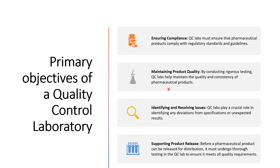QC labs help maintain the quality and consistency of pharmaceutical products. This includes monitoring parameters such as potency, purity and stability throughout the manufacturing process. The third objective is identifying and resolving issues — QC labs play a crucial role in identifying any deviations from specifications or unexpected results. When an issue arises, the QC lab works closely with other departments such as manufacturing and R&D to investigate the root cause and implement corrective actions.